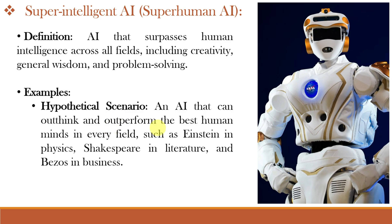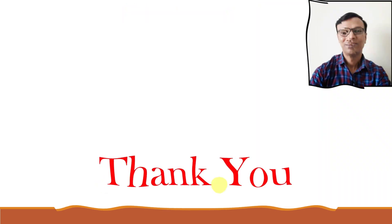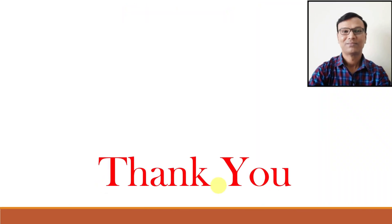Examples of super intelligent AI surpassing humans include an AI like Einstein in physics, Shakespeare in literature, and Bezos in business. Remember that the development of such AI can also be risky and could be harmful to humanity if not properly managed. That is all for this video class — thank you very much.